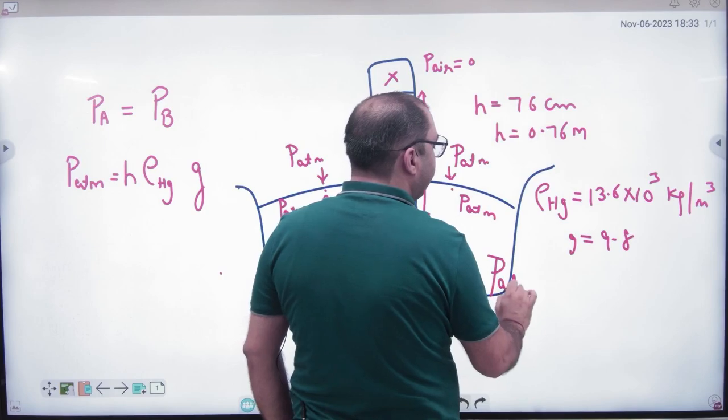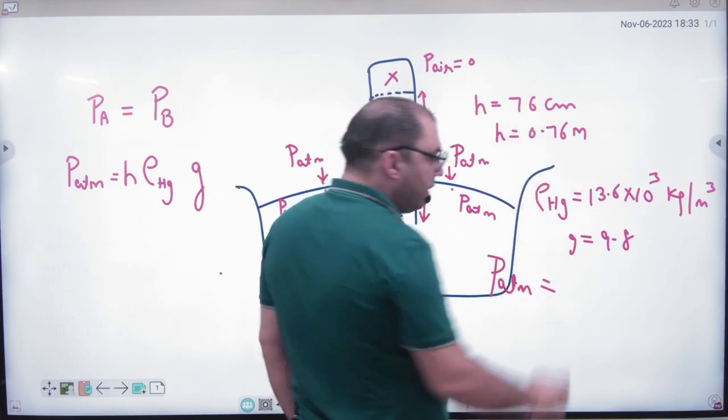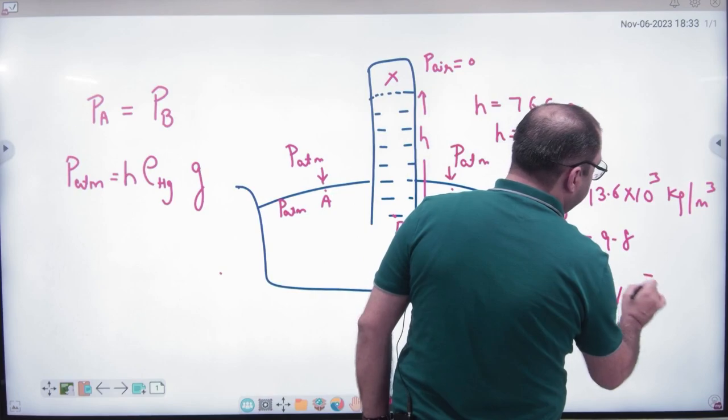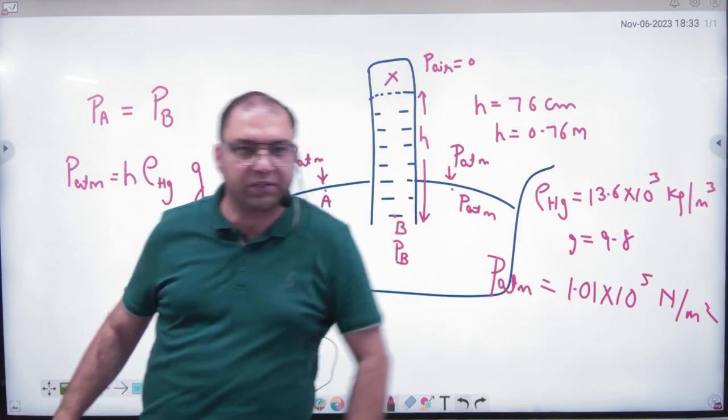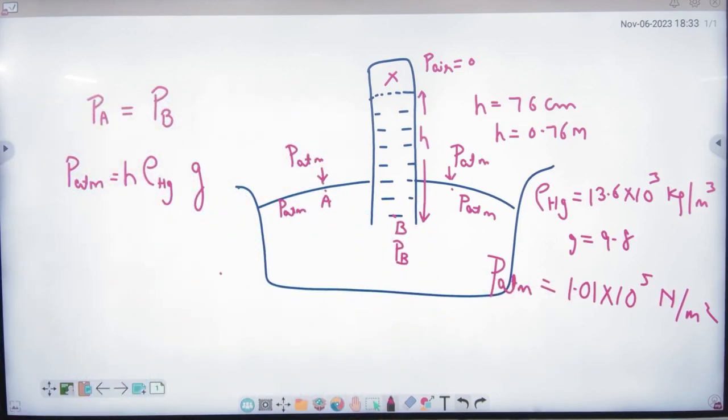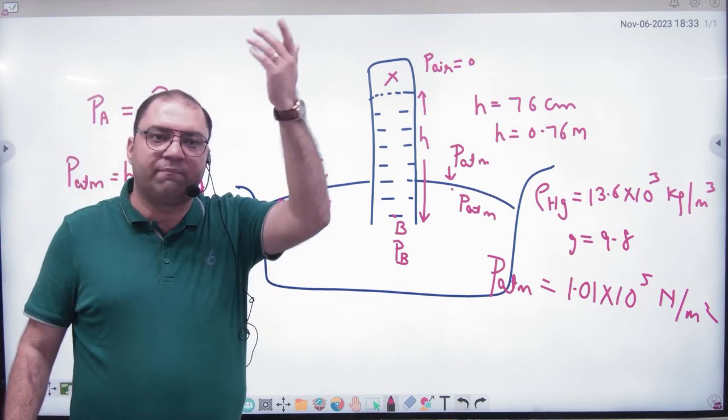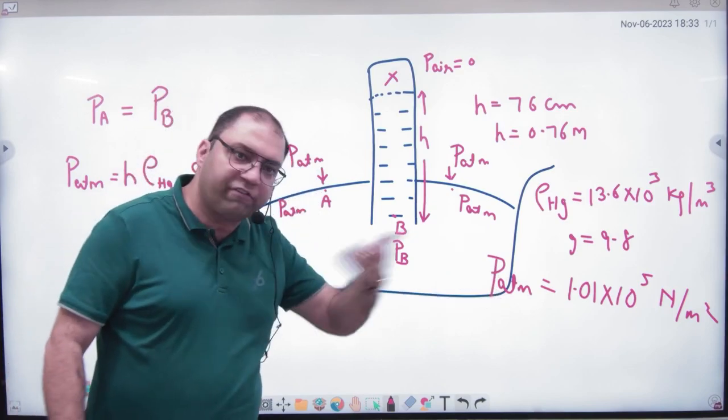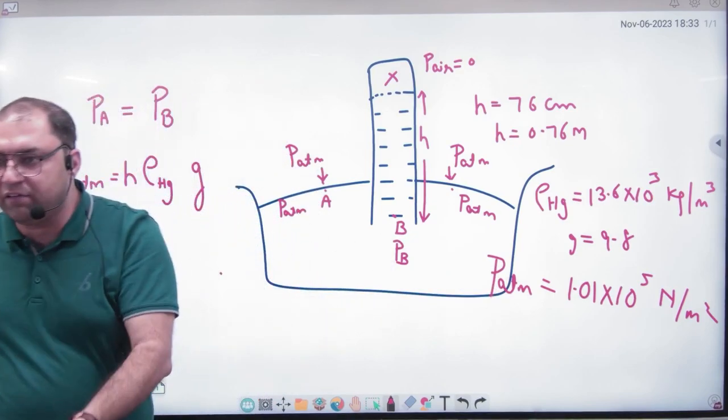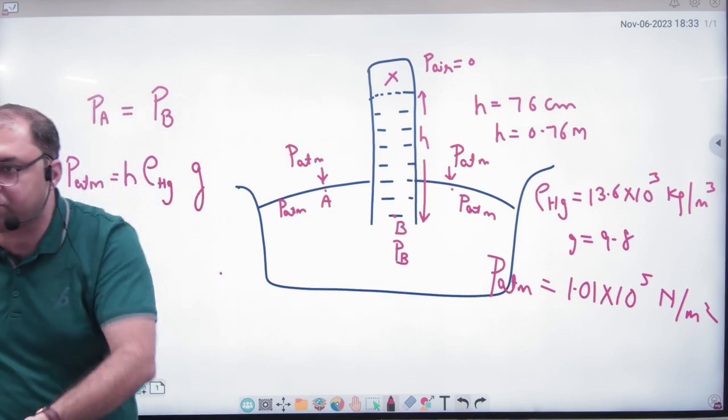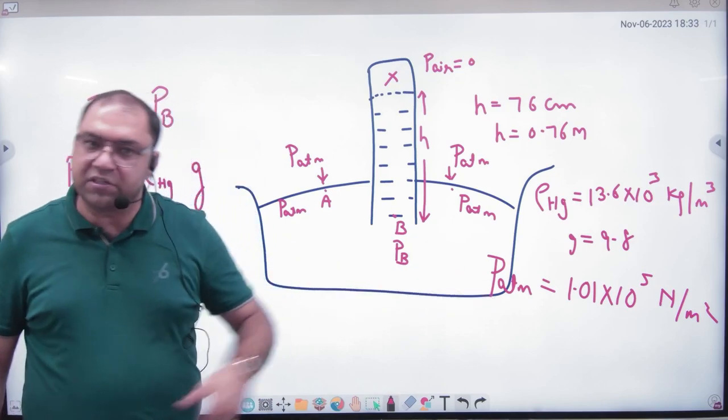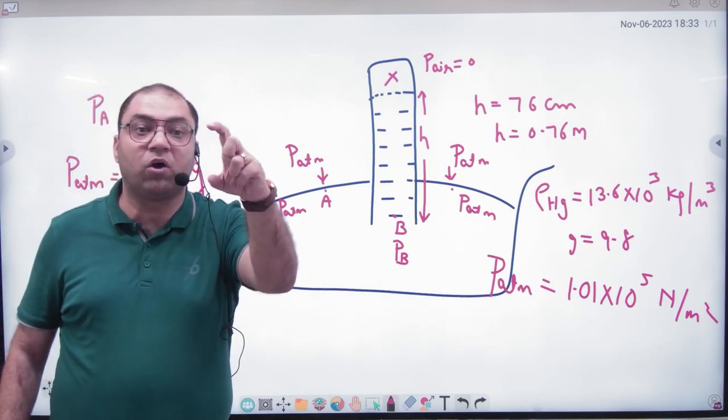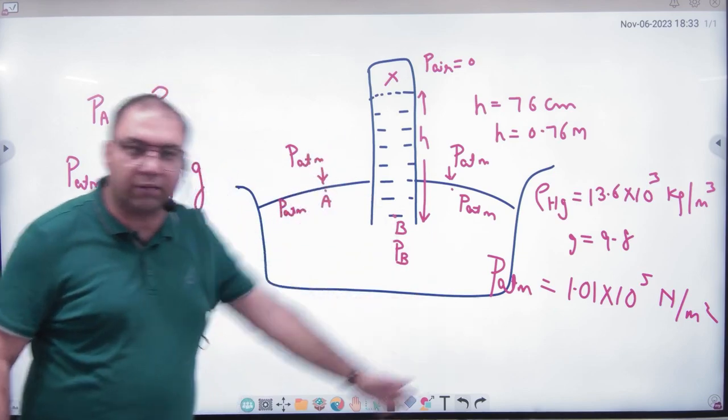If you put height in this equation, 0.76 meter, density of mercury is 13.6 into 10 to the power 3, and G is 9.8. So what will be atmospheric pressure? We will multiply these three. The answer will be 1.01 into 10 to the power 5 Newton per meter square, which you use as 10 to the power 5. So the atmospheric pressure is measured by Torricelli. So after today, if someone tells us how much pressure? 76 cm of mercury column, we know that it is 10 to the power 5. Or one atmosphere. So in some way, pressure will be expressed. One atmospheric pressure, or 76 cm of mercury column, but three of them are exactly the same. Do you understand?